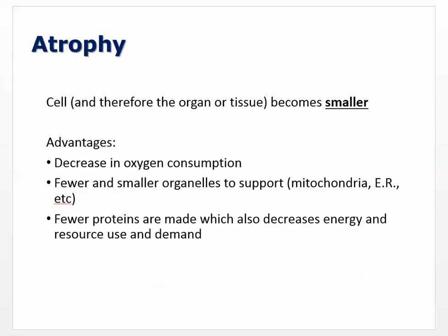Atrophy: the cell — and therefore the organ or tissue — becomes smaller. The big advantage is a decrease in oxygen consumption. If you have a smaller cell, it requires fewer resources. Why do we have atrophy? Because there isn't a demand, so the body is not going to throw a bunch of resources at it. There are fewer and smaller organelles to support, and fewer proteins are made, which also decreases energy and resource demand.